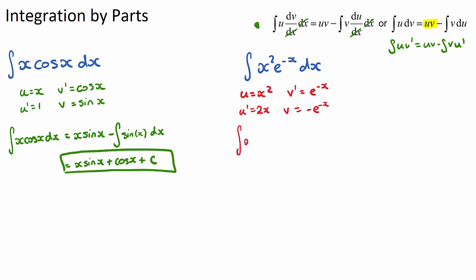Setting up the integral of x²·e^(-x) dx: this equals u·v, which is -x²·e^(-x), then minus the integral of v·u', which is -2x·e^(-x) dx. When simplifying the right-hand side, we still have another integration by parts because we can't simply integrate 2x·e^(-x). Let's tidy this up — the double negative gives us a plus, so we have plus the integral of 2x·e^(-x) dx.